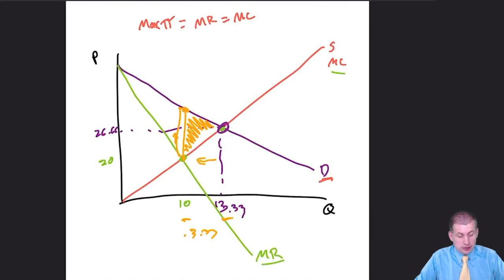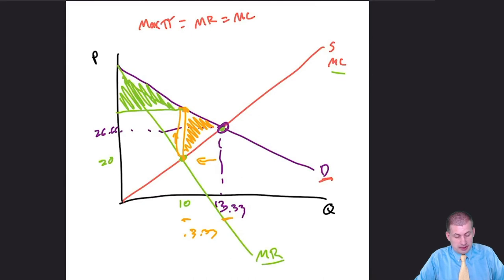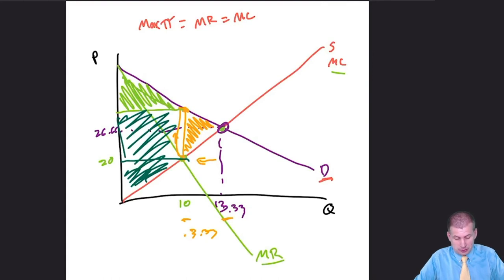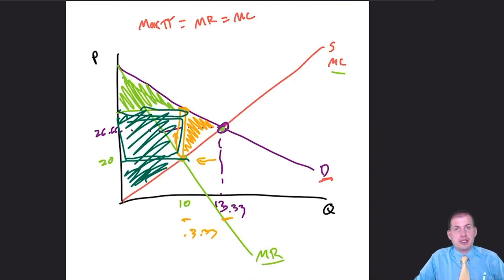We can also figure out producer surplus and consumer surplus. The producer surplus is the triangle below the price line above the supply curve, plus the rectangle — that entire area is now producer surplus. When we talked about taxes, this rectangle went to the government; with monopolies, it goes to the producer. Consumers lose a large surplus and society experiences significant deadweight loss.